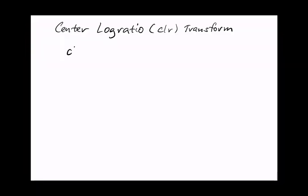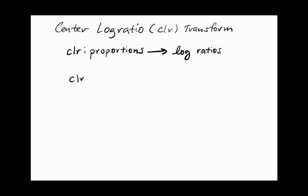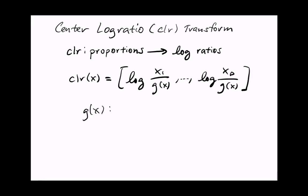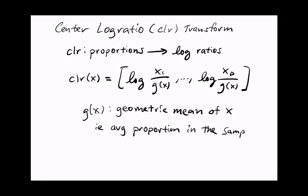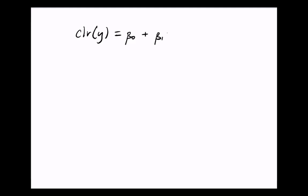The center log ratio transform, also known as the CLR transform, is a function that takes in proportions as input and converts them to log ratios. If you recall from the introduction, this is reminiscent of taking the logarithm of a concentration. The reference here is the geometric mean of the proportions, so you can think of the CLR transform as computing a log concentration where the denominator is the average microbial taxon proportion in our sample.